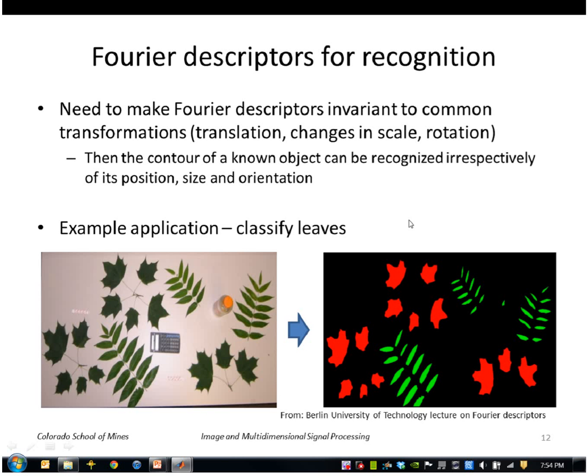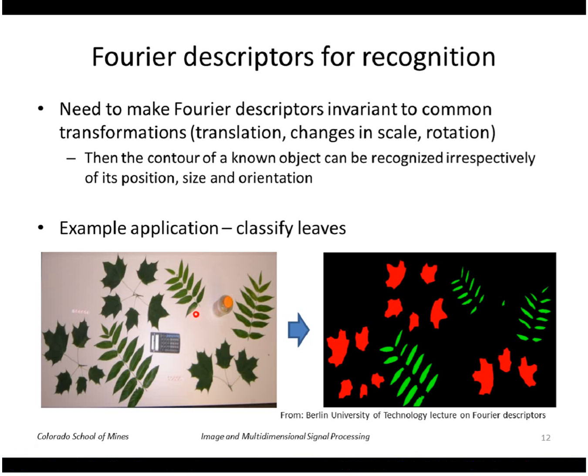In order to use these Fourier descriptors for recognition, we want to make them invariant to transformations like translation, changes in scale and rotation. An example might be if you wanted to recognize these leaves in an image,